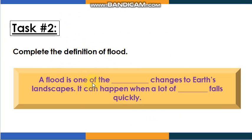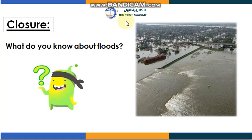Task number two: complete the definition of flood. A flood is one of the quick or slow — you choose — changes to Earth's landscapes. It can happen when a lot of rain falls quickly. I want you to answer this by yourself.